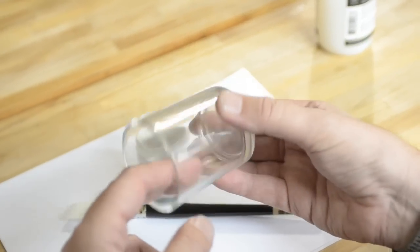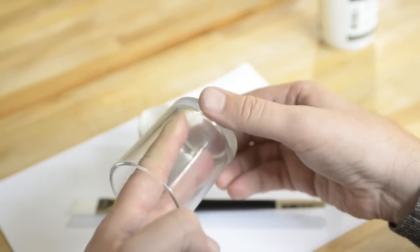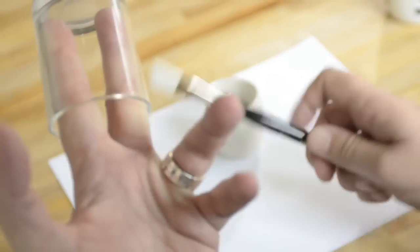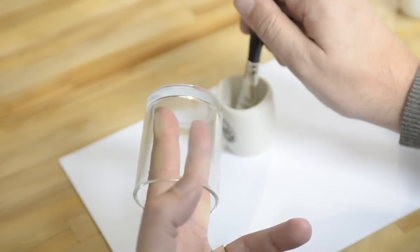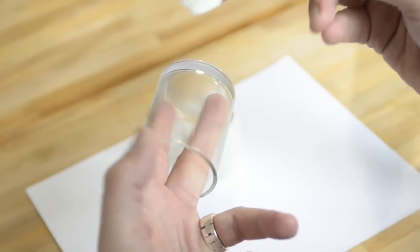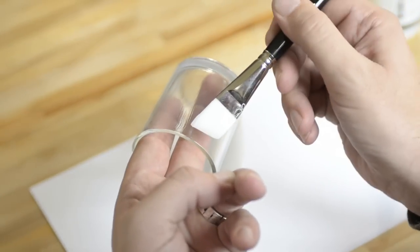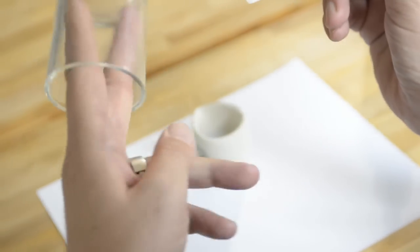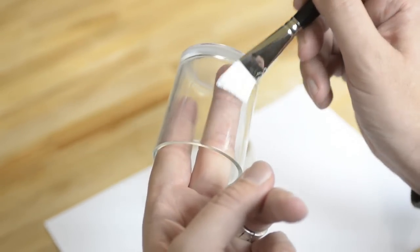Now we're going to apply the acrylic medium to the votive. I find it easy just to stick two fingers in and sort of separate them to hold the votive, and then just apply a very thin coat fairly rapidly because it dries quite quickly, all the way around the votive.